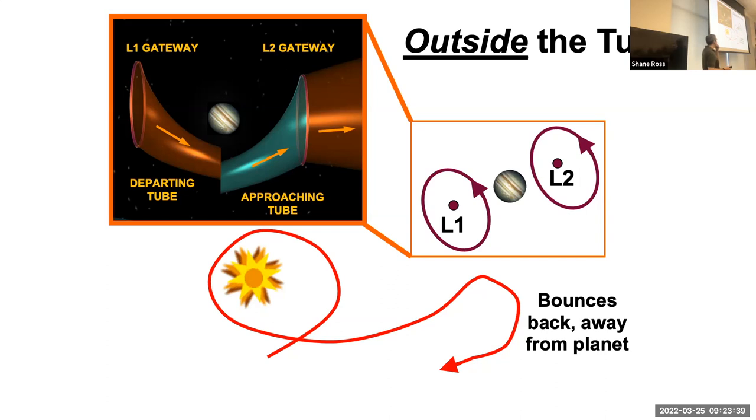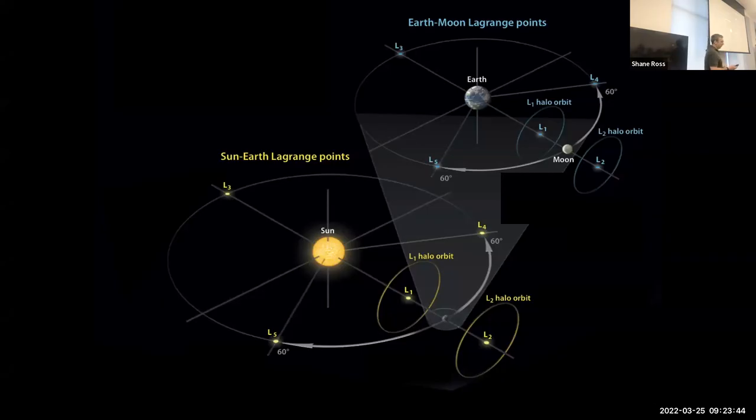I want to focus on actually looking at a few missions to show you how this gets used. This is showing schematically the sun-earth Lagrange points, not to scale. We've got the earth, the moon, and then four times the distance of the moon you've got L1 in the direction of the sun, and then L2 opposite that. We also have Lagrange points in the earth-moon system. There might even be interesting connections between Lagrange points of the two systems.